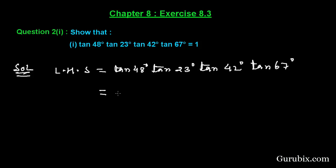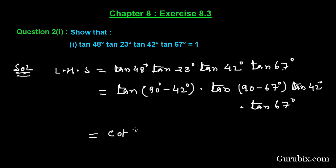So we can change it like this: tan(90° - 42°), then tan(90° - 67°), and these two values will remain the same. So here we have tan 42° and tan 67°. Using the complementary formula of tan, it becomes cot 42° and tan 42°, and this value becomes cot 67° and tan 67°.